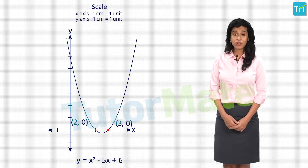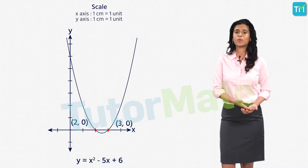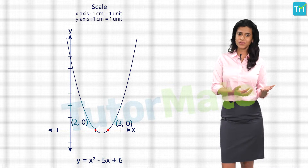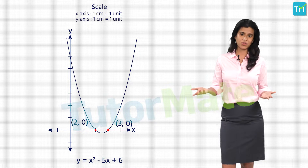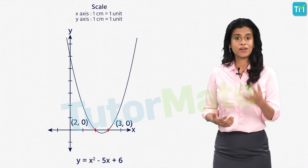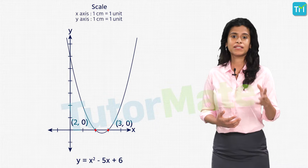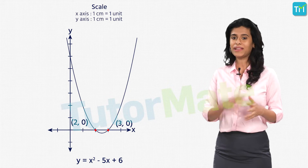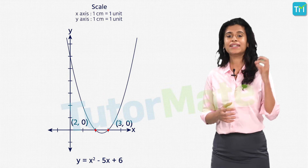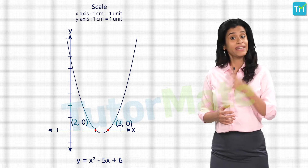If you remember, we saw how quadratic polynomials could either have two zeros, one zero, or no zero at all. Similarly, even a quadratic equation can have at most 2 roots, and with that we now know the number of roots that a quadratic equation can have.